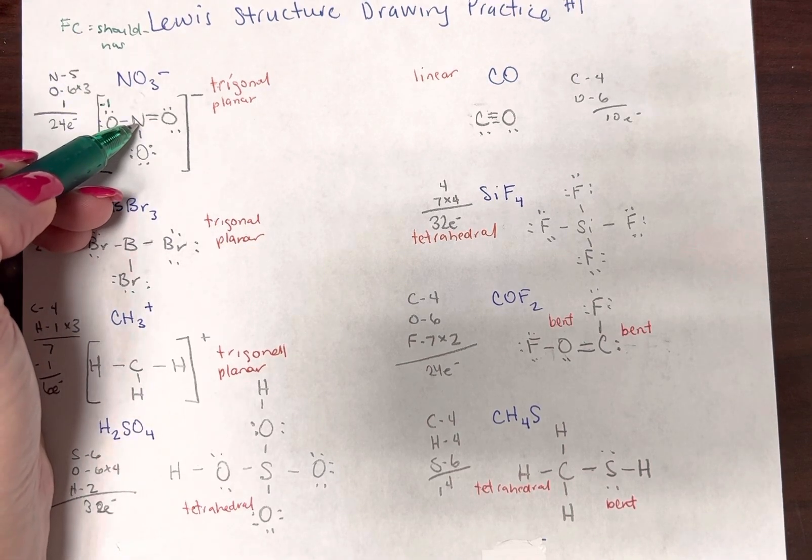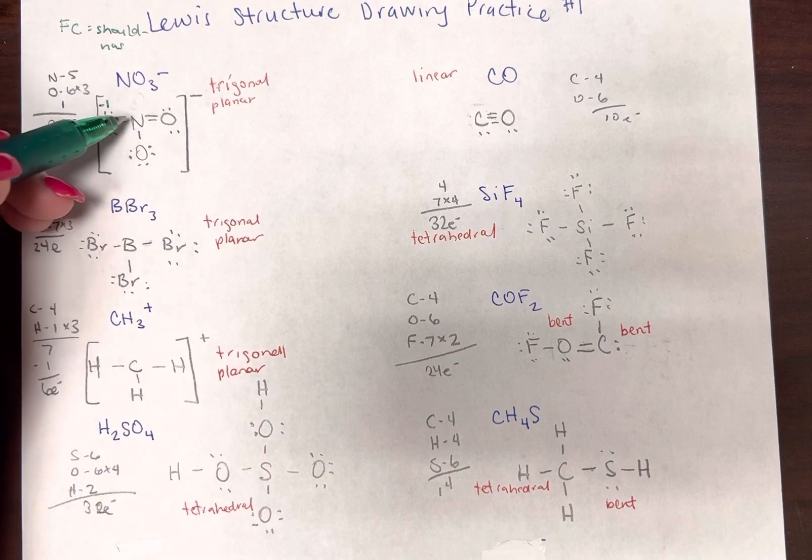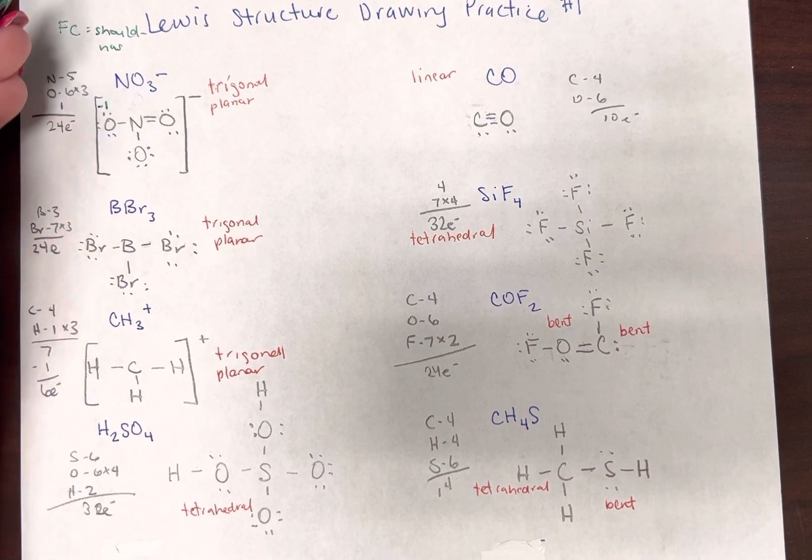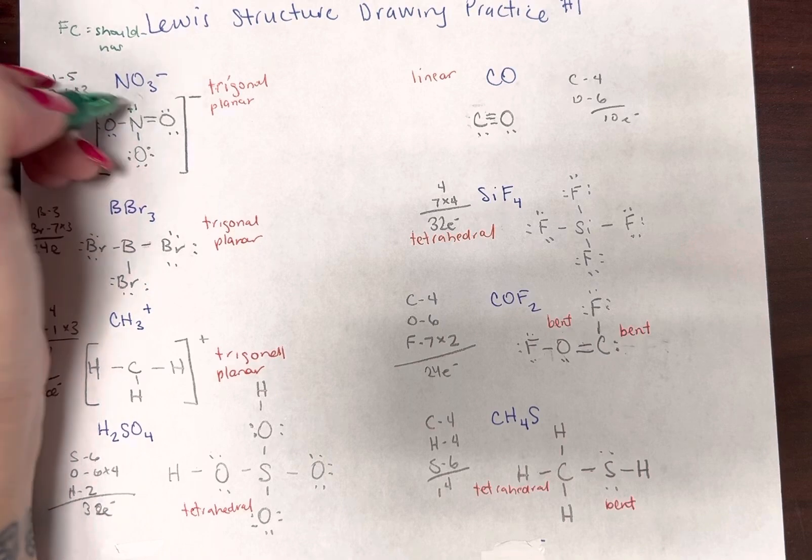Nitrogen brings in five. Here it has one, two, three, four. Five minus four is plus one.